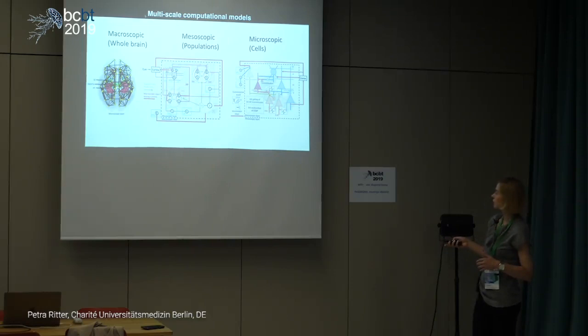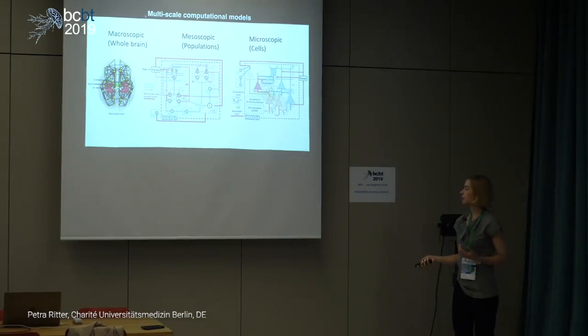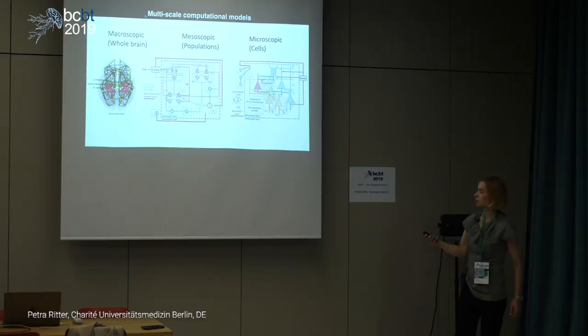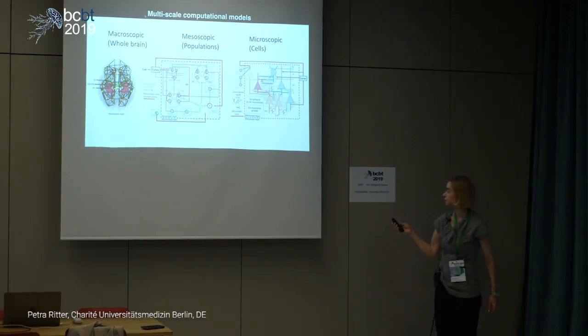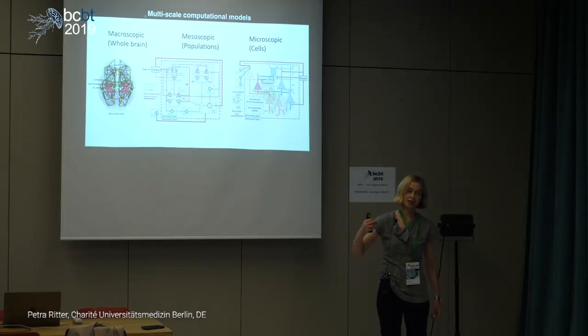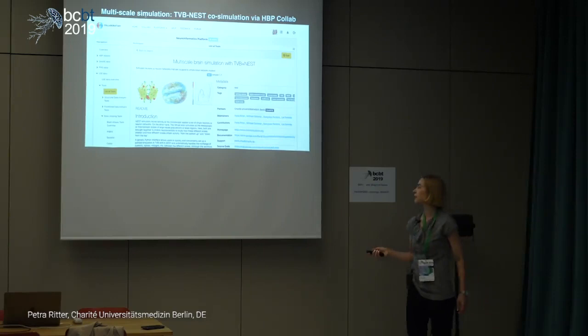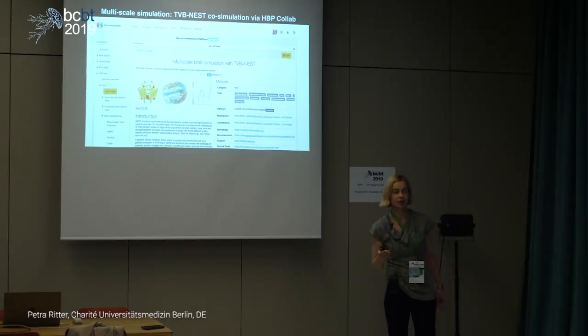With such models we can investigate how changes in the large-scale connectome — like neurodegeneration or decrease of myelination — interact with the capability of a microscopically detailed network to express certain features, such as spike timing-dependent plasticity. This has been developed as a first proof of concept: a co-simulation between the virtual brain and the NEST software, which is a well-established advanced software for cellular-level neuronal simulations.